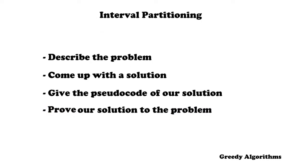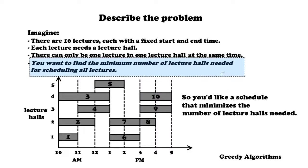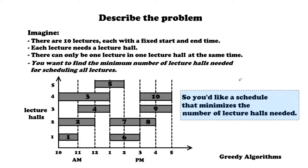Let's start with describing the problem. Imagine there are 10 lectures each with a fixed start and end time. Each lecture needs a lecture hall, and there can only be one lecture in one lecture hall at the same time. The most important thing is that you want to find the minimum number of lecture halls needed for scheduling all lectures. You'd like a schedule that minimizes the number of lecture halls — or in general, the number of resources needed.